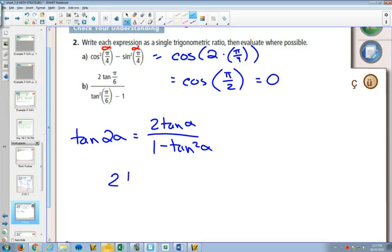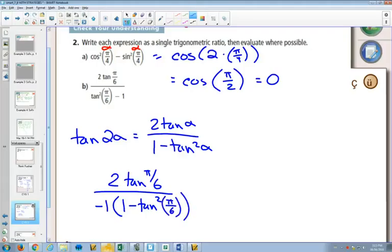I'll rewrite this: 2tan(π/6) over... and on the bottom, I'll factor out a negative 1, so I have 1 - tan²(π/6).